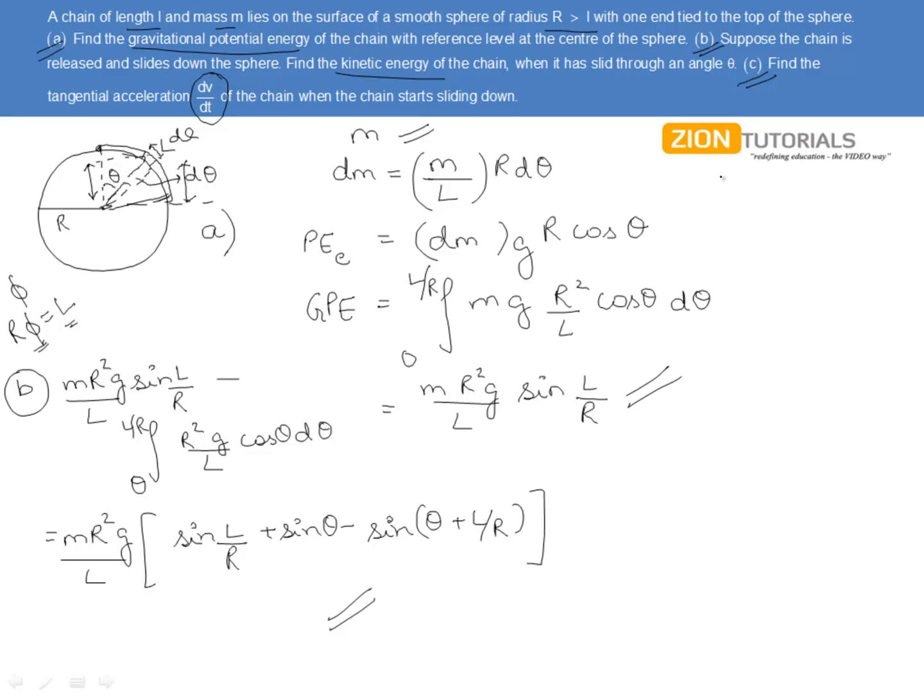Coming to the last and the third part of this question, that is find the tangential acceleration of the chain when it starts sliding down. Here, the chain has, let us take a somewhat generalized case when the chain has slipped by an angle theta. So, there, the kinetic energy will be equal to the change in the potential energy. The potential energy we have found out in the second part for any generalized theta. And what will be the kinetic energy? It will be half M V square. So, we can simply write it down as half M V square equal to the potential energy that has been found in the part B.